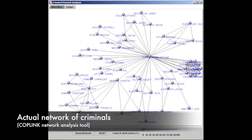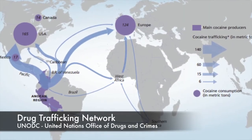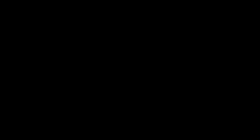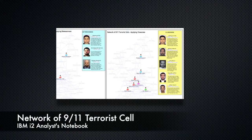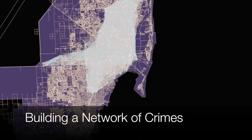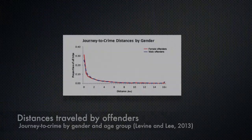Criminal activity relies heavily on different types of networks, such as social networks in gangs and the word-of-mouth flow of information regarding any type of illegal market. The presence of these relations suggests that network science can be a powerful tool for analyzing criminal activity.